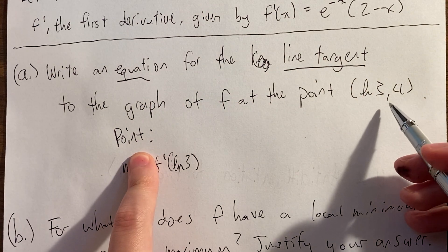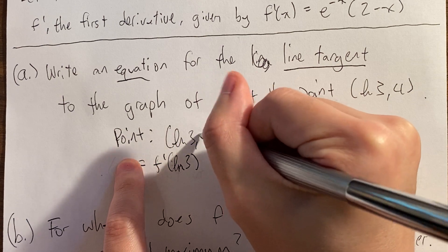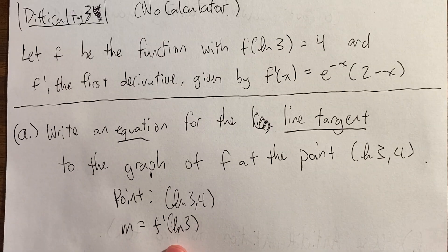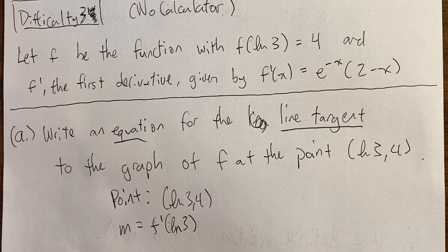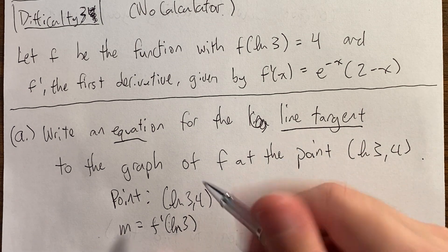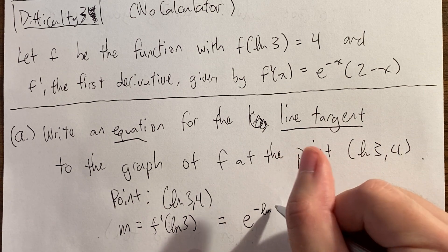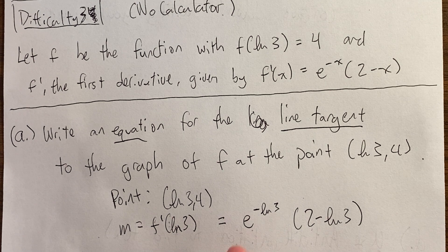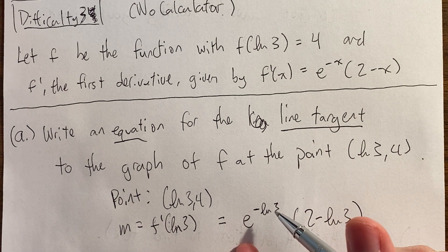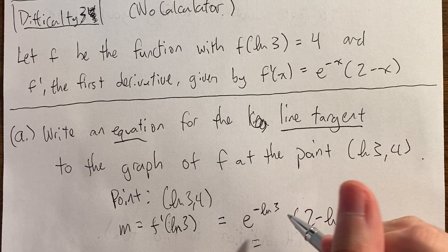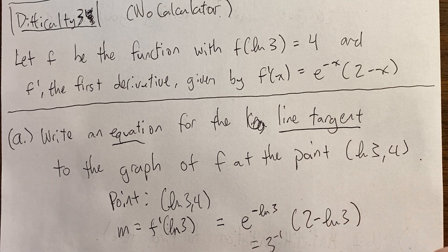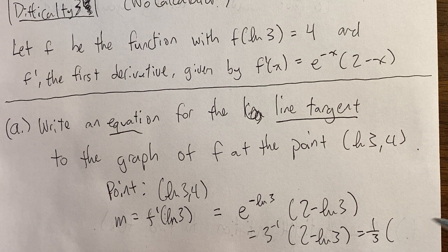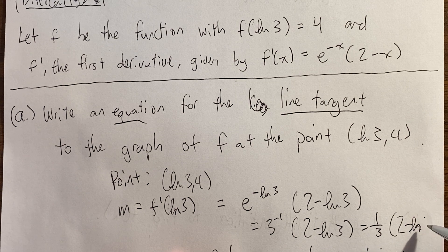First, find the point — they give it to us directly. For the slope, we plug ln(3) into the derivative: e^(−ln3) · (2 − ln3). Using ln rules, e^(−ln3) = 3^(−1) = 1/3. So the slope is (1/3)(2 − ln3). We didn't have to take a derivative ourselves since f' was already given.